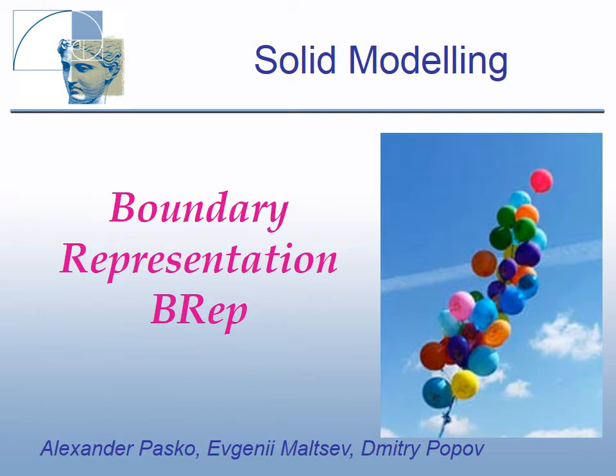The boundary of the solid is a two-dimensional manifold. Each point of the boundary has a neighborhood with one-to-one correspondence to a disk in the plane. Local modifications of the boundary are performed using operations such as moving a vertex, edge, or face. Topological modifications are performed using Euler's operators, which include adding and removing vertices, edges, and faces.